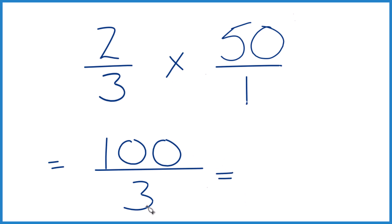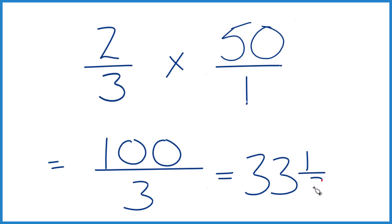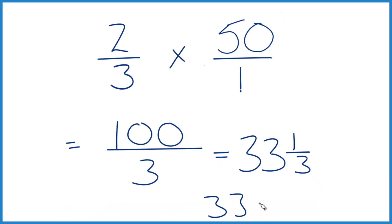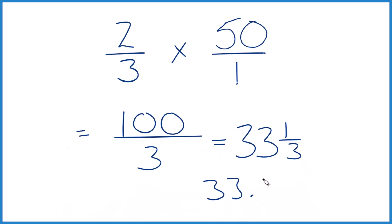So you could say 3 times 33 — 3 times 33 is 99 with one left over. So we'd have 33 and 1 third as a mixed number. Or you could take 33 and then 1 third, which equals 0.333 — the three just keeps repeating, so put a bar over it. That's your decimal: 33.3 with a 3 repeating.